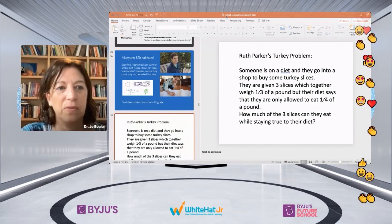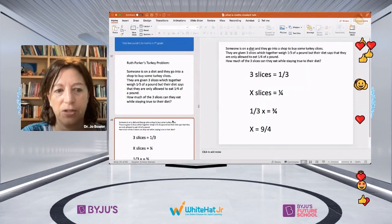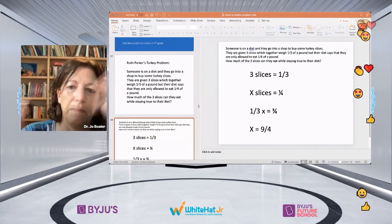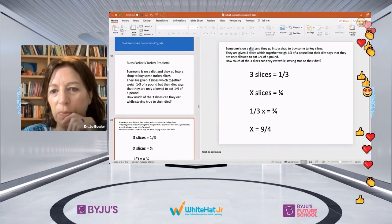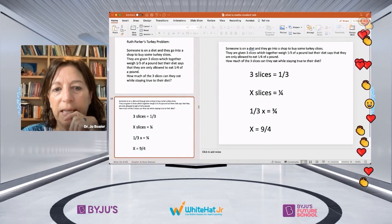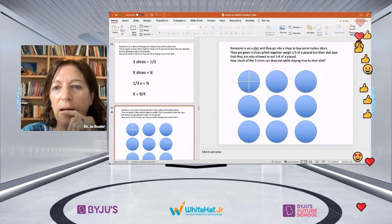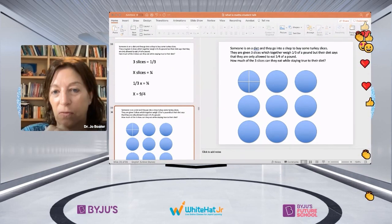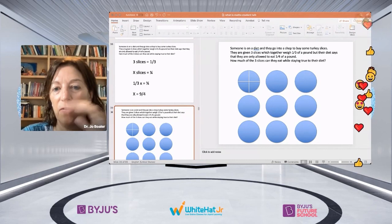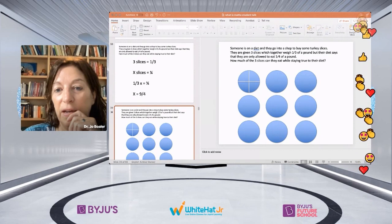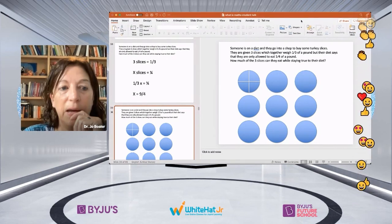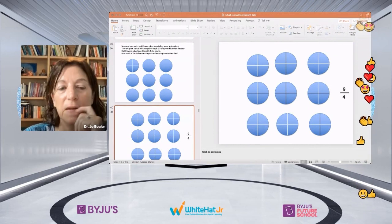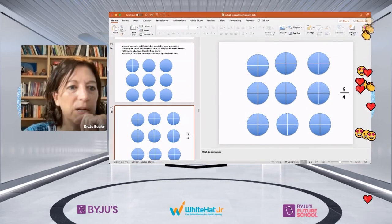I can tell you that a lot of people when they're given a problem like this, they set it up as a calculation and they do some hard algebra. I'm showing you that calculation on the screen: three slices are a third, so I make it into x. But I wanted to show you what one nine year old girl did when she was given this problem. She said, they're given three slices which weigh a third of a pound. So she drew out three slices and said, if three slices weigh a third of a pound, then I know that nine of them are a pound. And I'm asked, how much is a quarter? So I'm going to take my nine circles and make them into quarters and then add them up. So again, just a beautiful visual approach and thinking visually in these ways is super important.